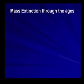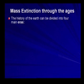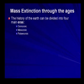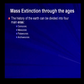We carry on with mass extinction through the ages. The history of the earth can be divided into four main areas — you've got to know these: your Cenozoic, your Mesozoic, your Paleozoic, and your Archozoic. Make a silly word — CMPA — so that you remember them. Notice they all end in 'ozoic.'